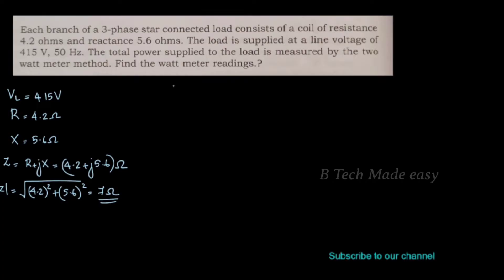We are going to say P is equal to √3 into VL into IL into cosφ. We need to use VL equal to 415 V, and we need IL and cosφ.